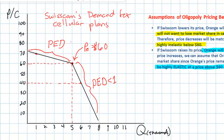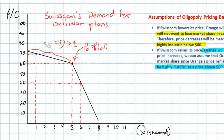The slope of this demand curve is based on our assumptions of how Orange will respond to price changes by Swisscom. Price decreases will be matched in order to maintain market share, but price increases will be ignored in order to capture customers who switch from Swisscom. Based on the kinked demand model, we can make some predictions about how Orange and Swisscom will determine the prices for their cellular plans. We should assume Orange will have very little incentive to lower its price.